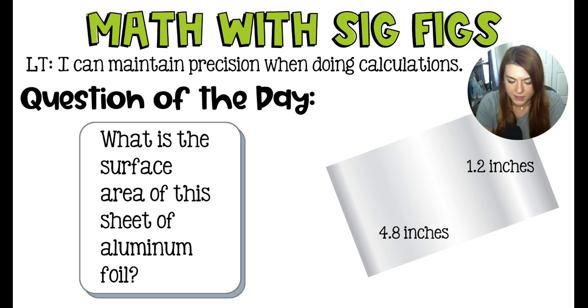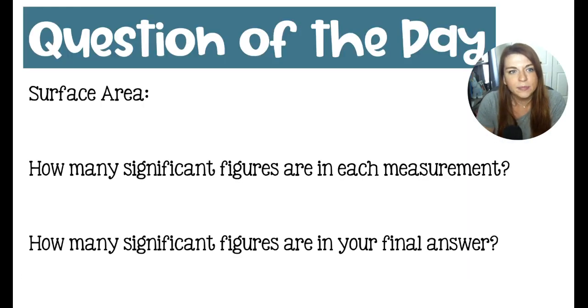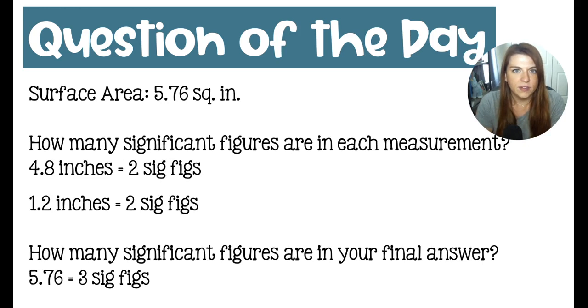You should remember that surface area is - we're talking about a sheet of aluminum foil, so we're just talking two dimensions. So we would do the 4.8 times the 1.2, and you get 5.76 square inches. So the surface area is 5.76 square inches, and we are obviously talking about significant figures.